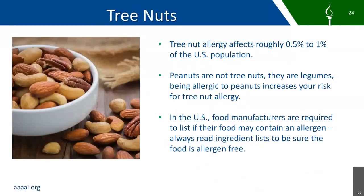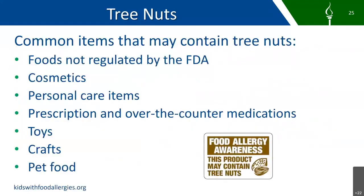The tree nut allergy affects roughly 0.5% to 1% of the U.S. population. Peanuts are not tree nuts — they are legumes — so being allergic to peanuts increases the risk of being allergic to tree nuts. In the United States, food manufacturers are required to list if their food may contain an allergen, so always read the ingredients list to be sure that the food is allergen-free. Some common items that may contain tree nuts include foods not regulated by the FDA, cosmetics, personal care items, prescription and over-the-counter medications, toys, crafts, and pet foods.